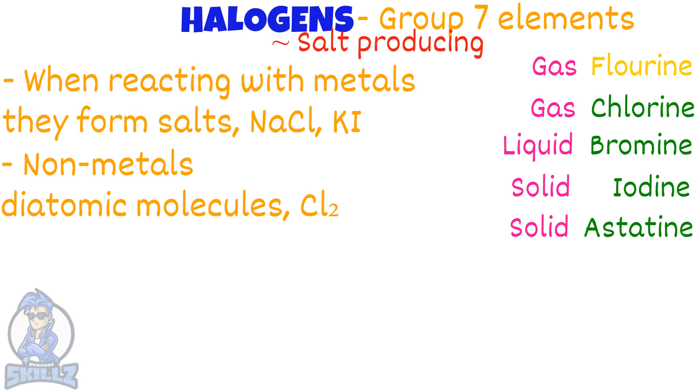Bromine is red-brown, iodine is a grey solid but as a gas it is purple, and astatine is black.